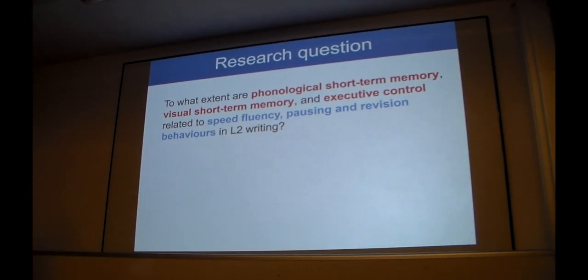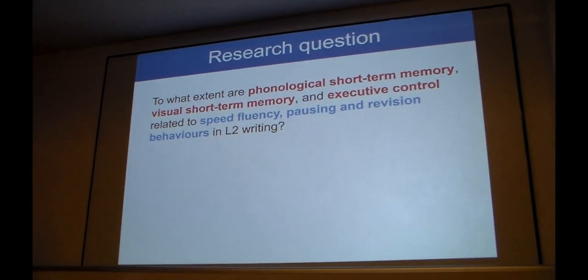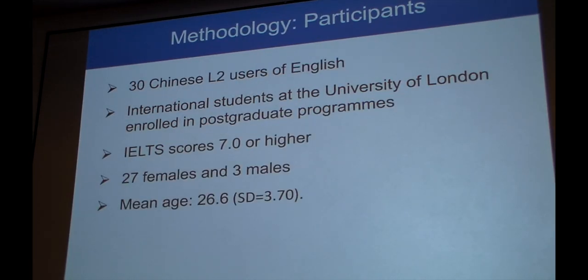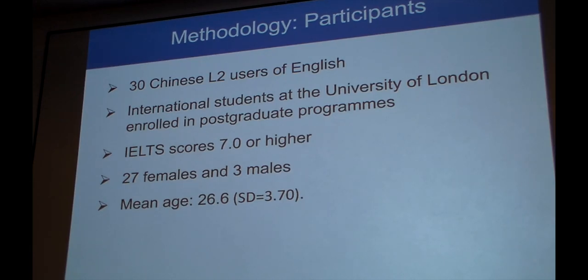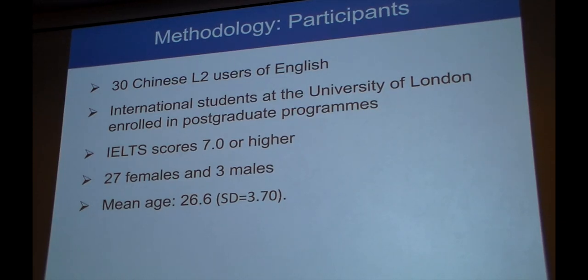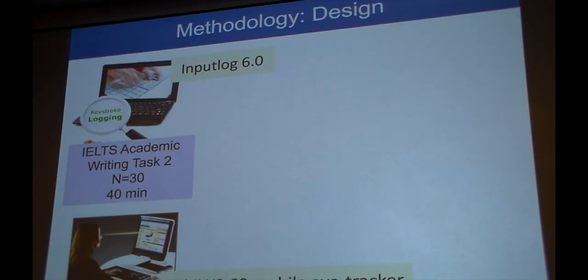So our research question, among many, but the one which I'll be talking about today, was: to what extent are phonological short-term memory, visual short-term memory, and executive control related to speed fluency, pausing, and revision behaviors in second language writing? The participants were 30 Chinese L1 users of English. They were all international students at the University of London. They had IELTS scores seven or higher, the majority were female, and the mean age was around 27.